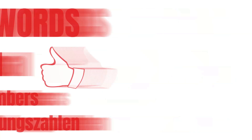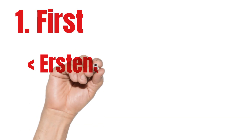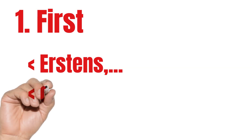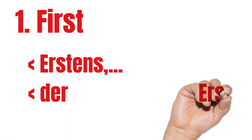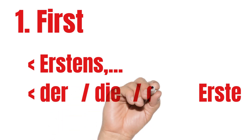First things first, therefore we start with 'first.' If we use first for a numbered list, we say Erstens. If we use it with articles without nouns, it goes like this: der Erste, die Erste, das Erste.